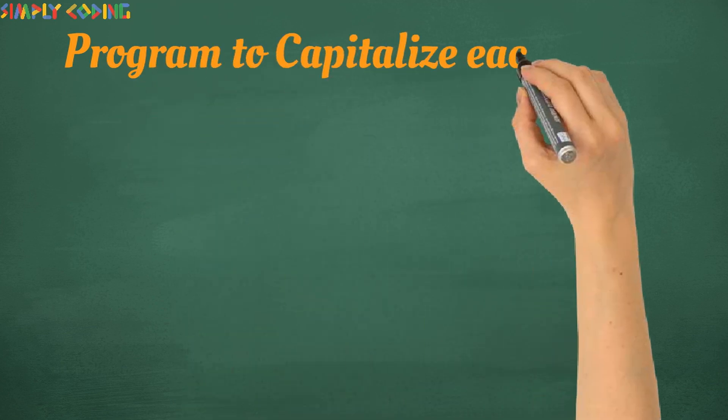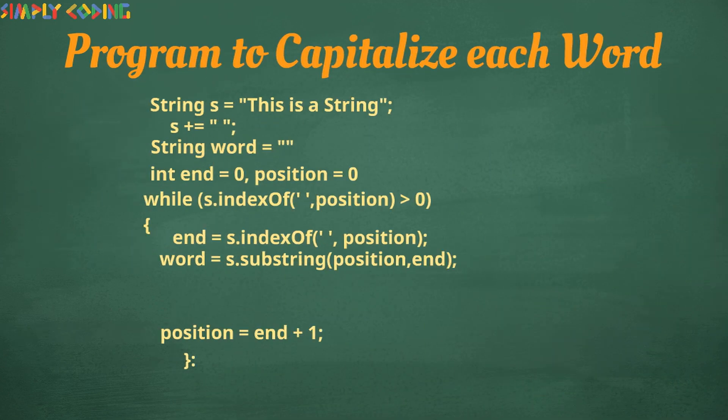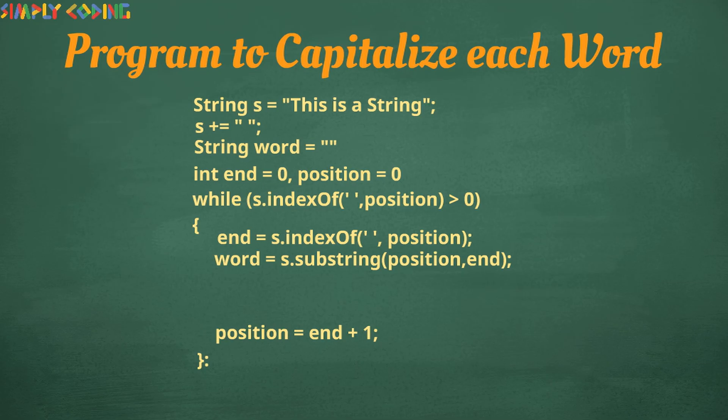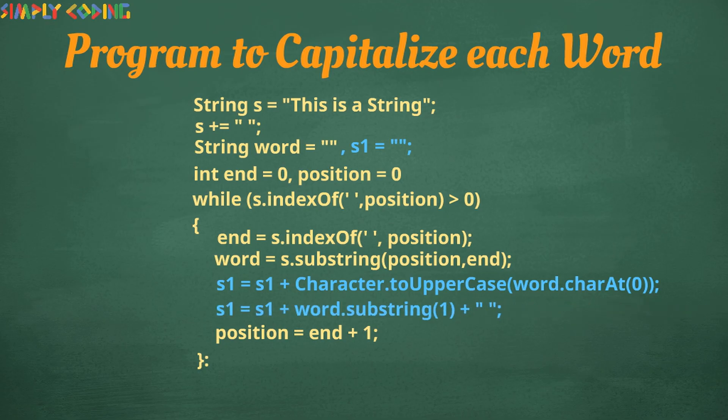Now the other kind of program could be where you have to create a new string after doing some manipulation. For example, make the first letter of each word capital. Here you will first make a new string s1 outside of the loop. Now you will write a code to first add to s1 uppercase first character. Then you will add the remaining characters of the word by using substring. And we should not forget to add the space in the end. This will give us the revised string.